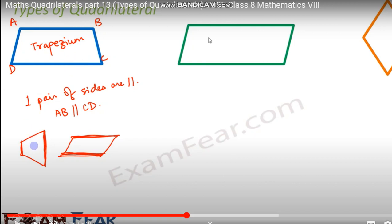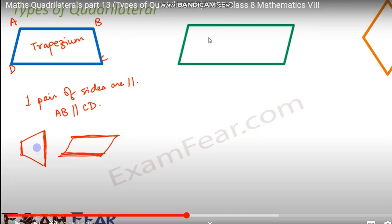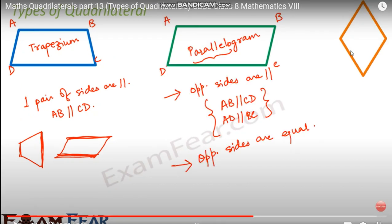In another case, this is also a trapezium where two line segments are different but two sides are equal. So the trapezium is a quadrilateral in which any one pair of sides are parallel. That type of quadrilateral is called a trapezium.